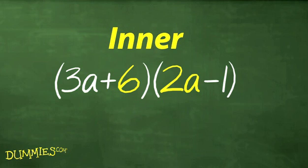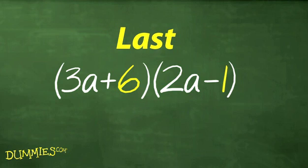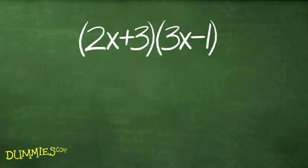I stands for the inner terms in the middle, and L stands for the last term in each binomial. Here's how to use FOIL on a multiplication problem.